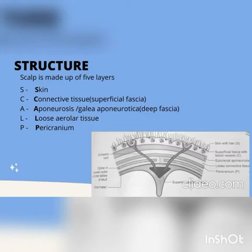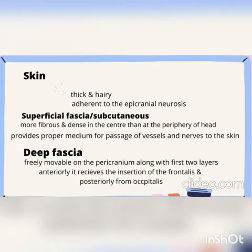The first layer is skin. Skin is thick and hairy, and it is adherent to the epicranial aponeurosis, similar to the palms and soles. The next layer is the superficial or subcutaneous fascia, which is more fibrous and dense in the center than at the periphery of the head.